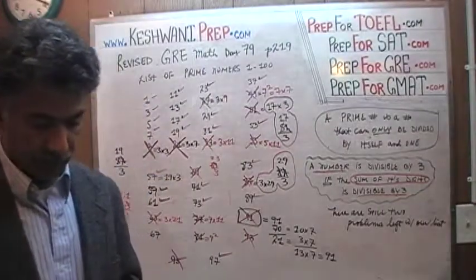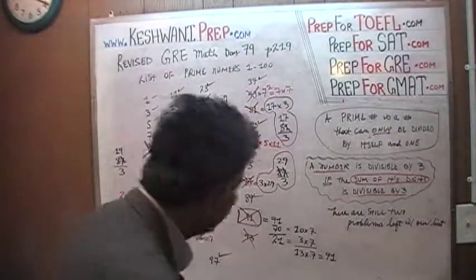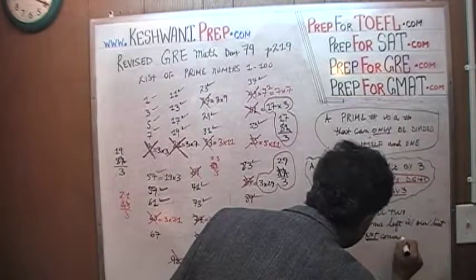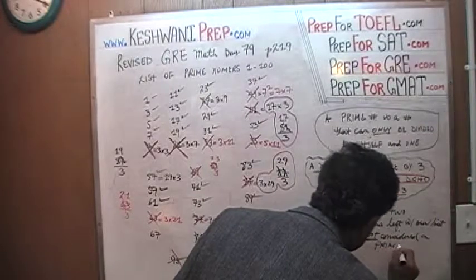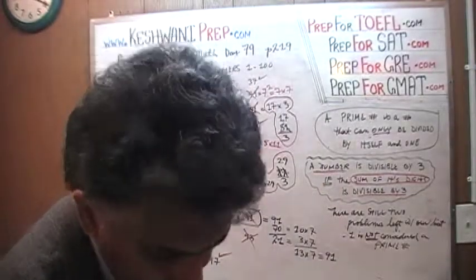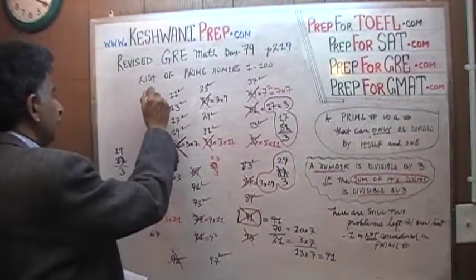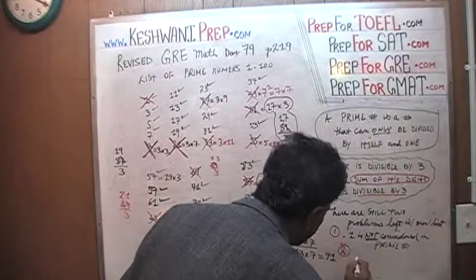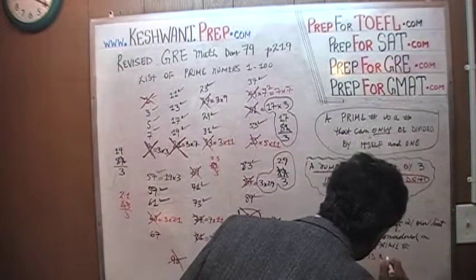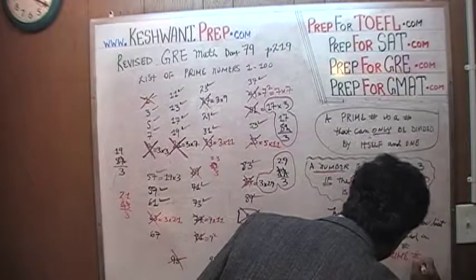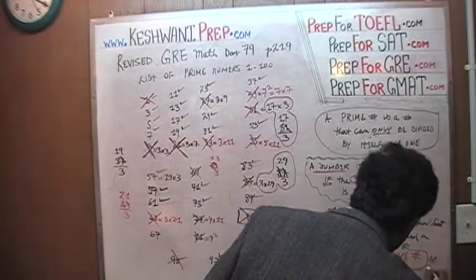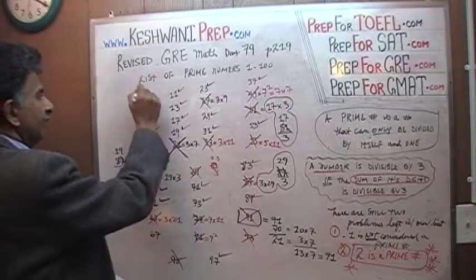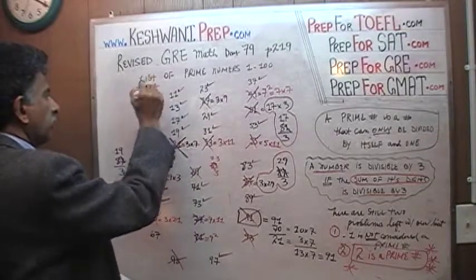There are two problems with our list. The first is that one is not considered a prime number — even though it's an odd number, it is not a prime number. The second problem with our list is that two is a prime number. We need to replace that one with a two.